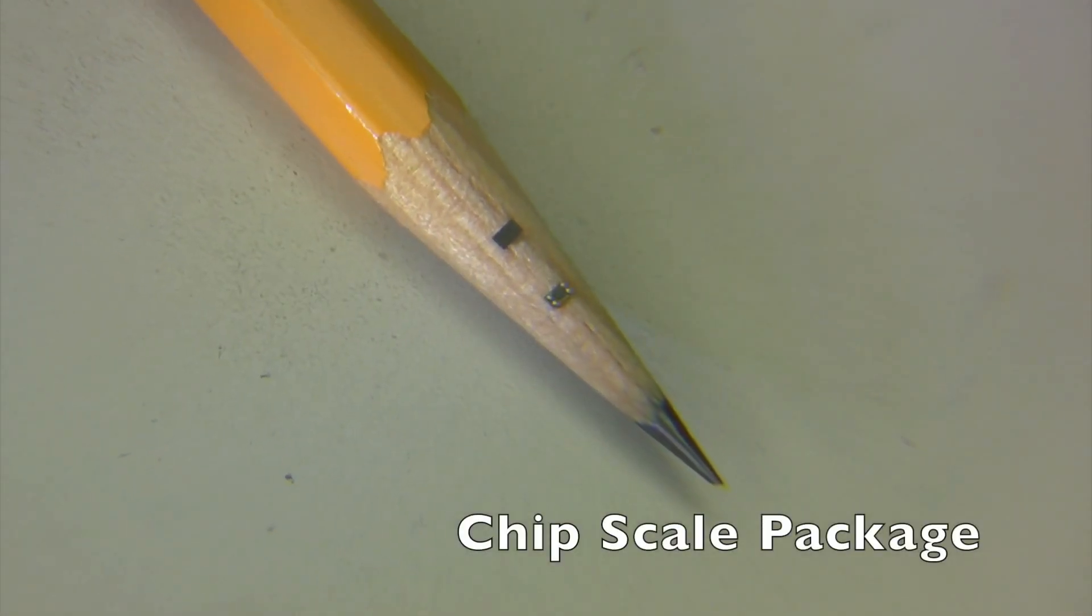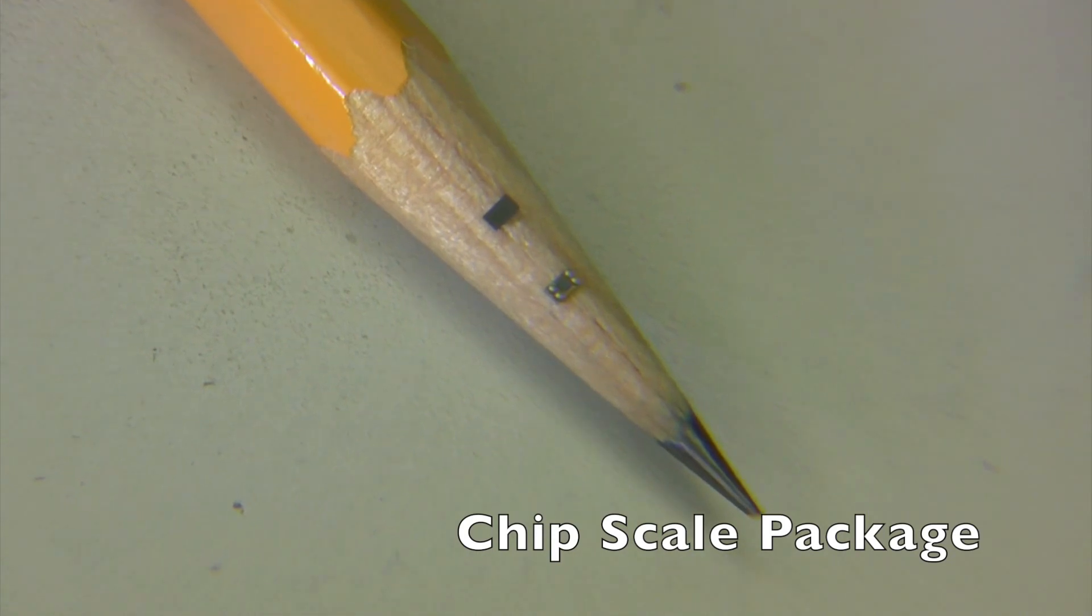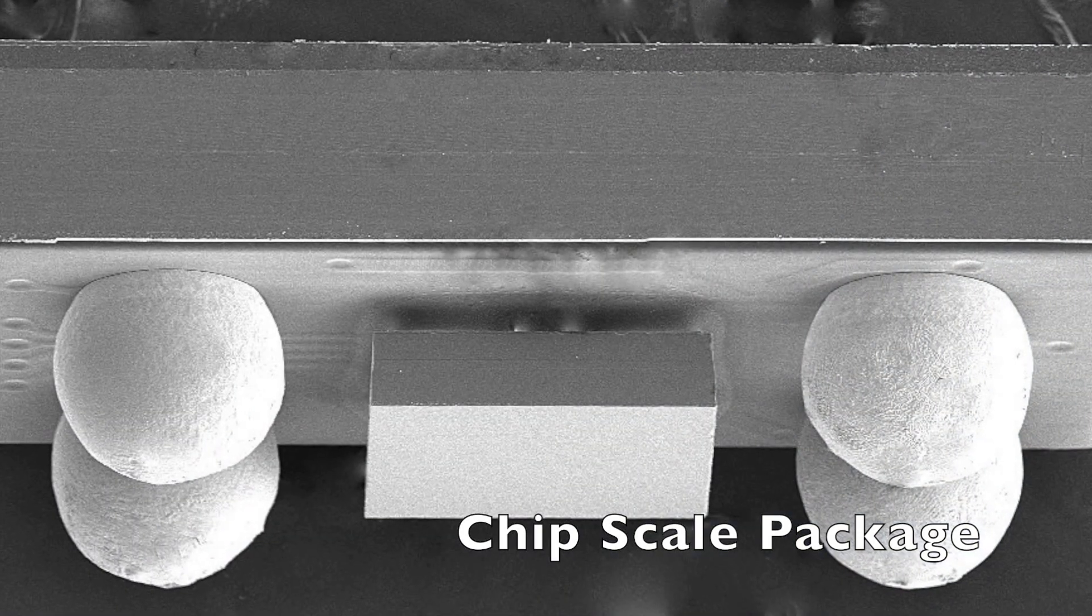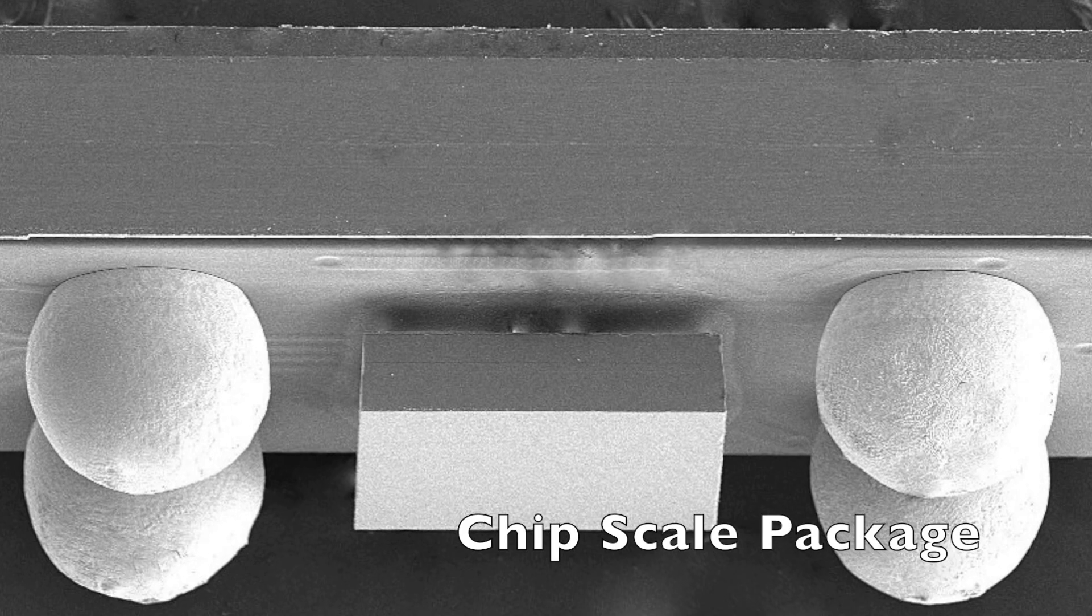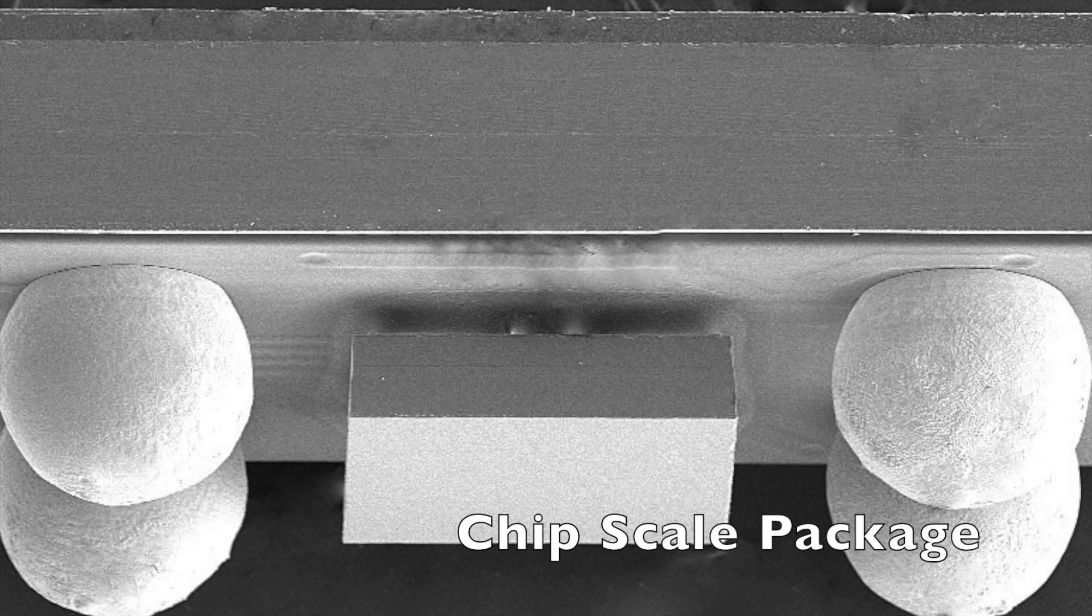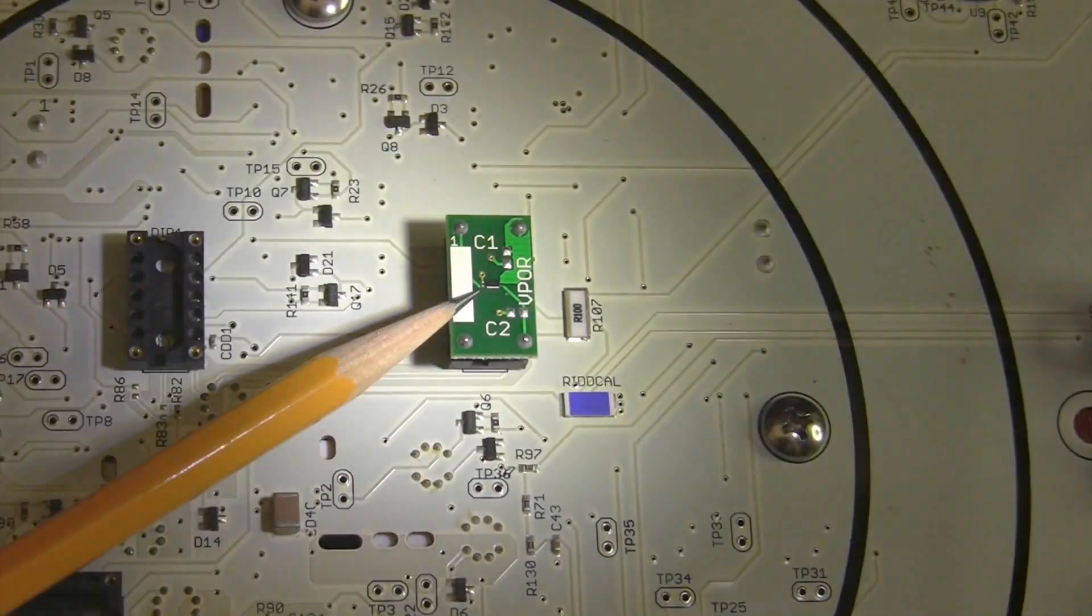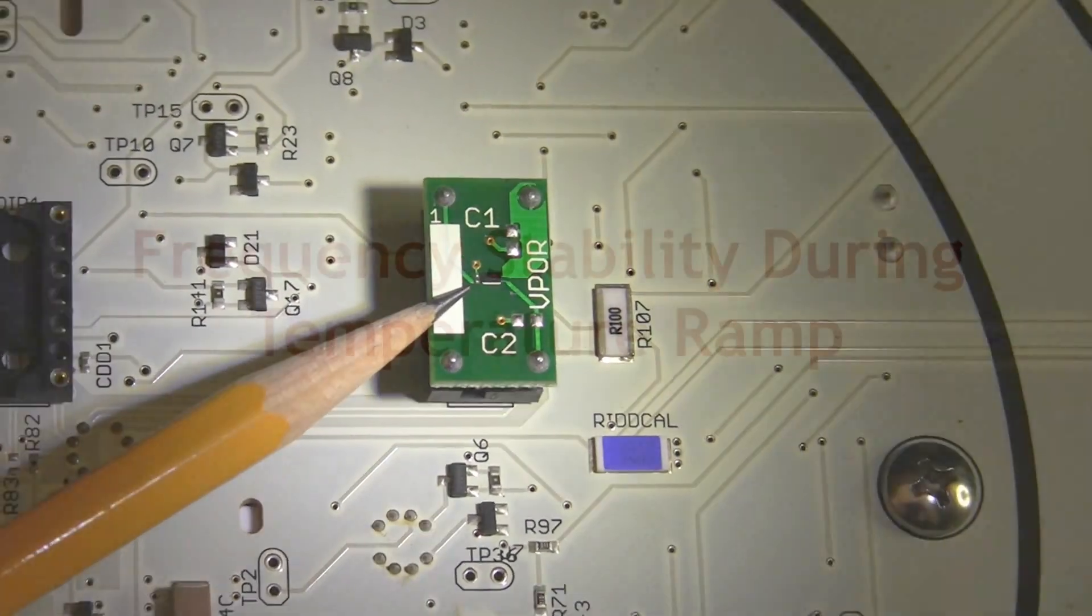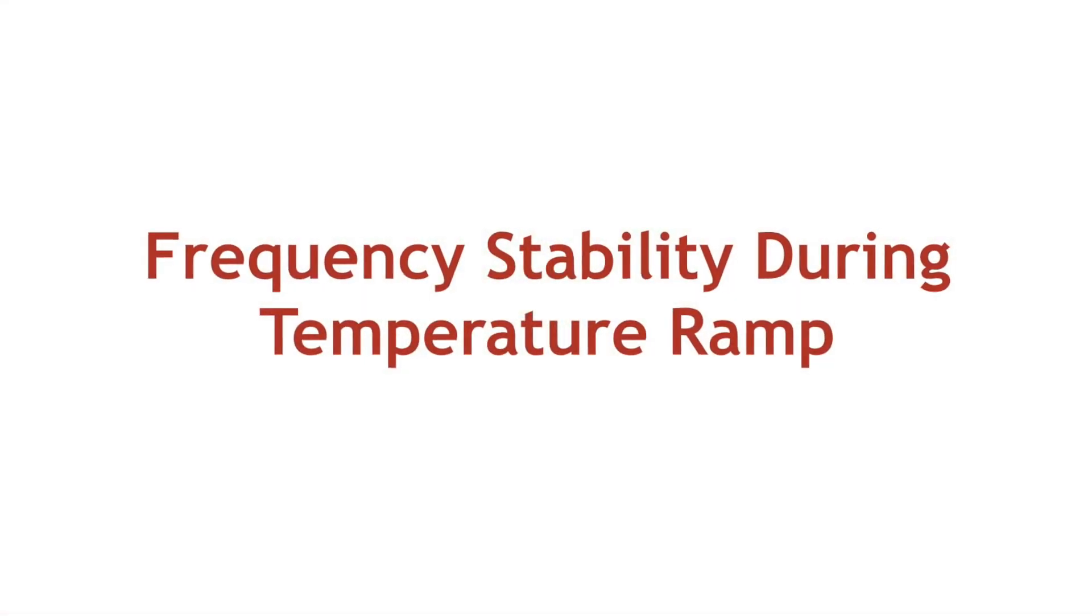Unlike quartz-based resonators confined to a ceramic package, the new SIT1552 TCXO comes in an ultra-small chip scale package, only 1.5 by 0.8 mm in the XY dimension and less than 0.6 mm in height. A TCXO includes temperature compensation circuitry that maintains very tight frequency over temperature.